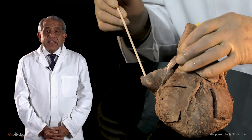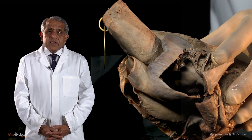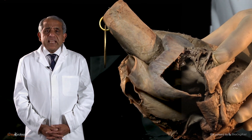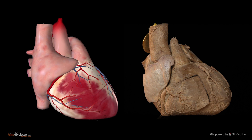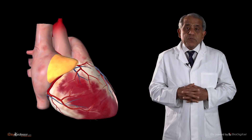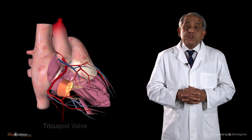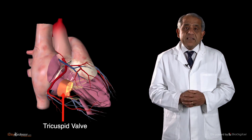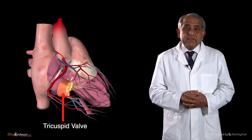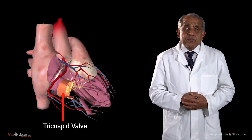Looking at the interior of the right atrium, most of it is rather smooth-walled, and projecting from it is a little appendage — the right atrial appendage, or the right auricle. The valve between the right atrium and the right ventricle has three cusps and is therefore called the tricuspid valve. Its function is to prevent blood from flowing back into the right atrium from the right ventricle.